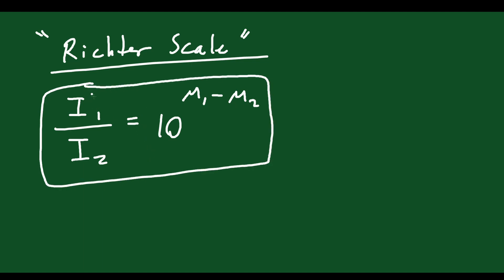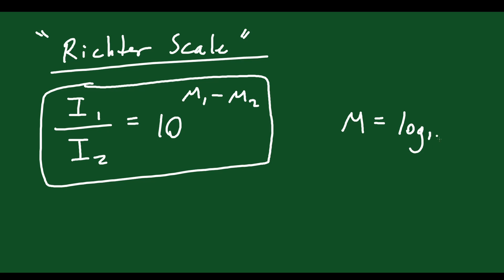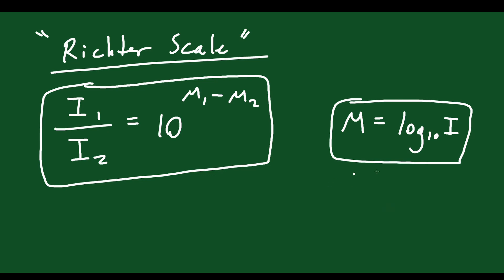If you want to know how many more times intense one earthquake is than another, you plug their magnitudes into the formula and solve. There's also another equation which says that the magnitude of a particular earthquake is log base 10 of its intensity. So if you know the intensity in its appropriate units, you can figure that out.